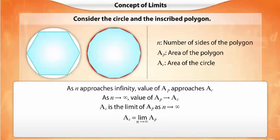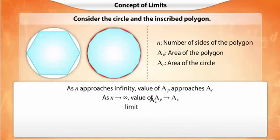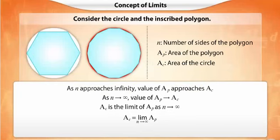Let us see the process of converting the given statement into symbolic form once again. Note: we call AC the limit of AP because AC is the bound of AP.